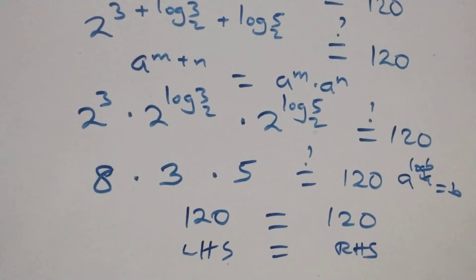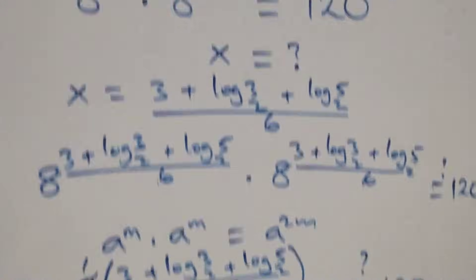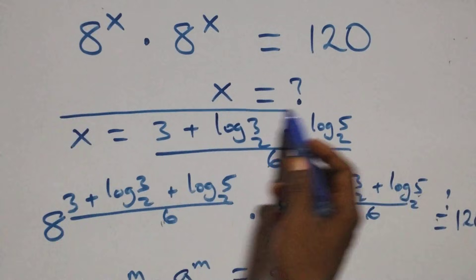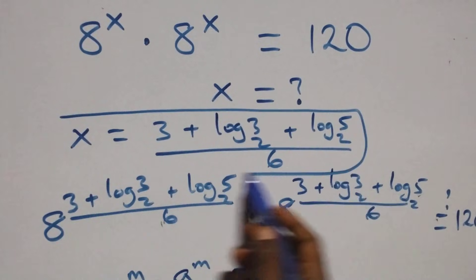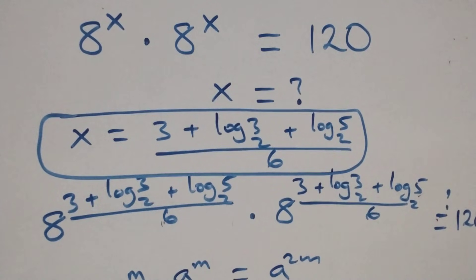Therefore, we conclude that x equals (3 + log₂3 + log₂5) over 6, and this satisfies the given problem. Thank you for watching. Don't forget to subscribe for more videos and turn on the notification bell. Share this video with a thumbs up. See you in the next class — bye for now!